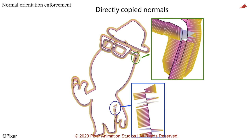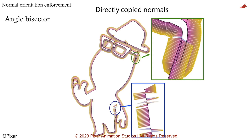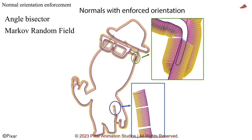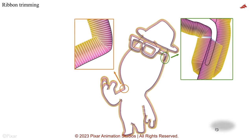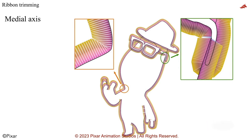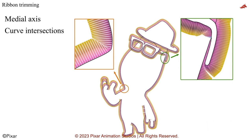To fix the skewed normals, we replace them with their angle bisector. To fix the alignment, we use a Markov random field to spatially align the normals along the curves in the first frame, and then temporally track the alignment to fix subsequent frames. From the adjusted curve normals, we create and trim a ribbon. To remove overlaps along the curves, we trim to a medial axis approximation from the points Voronoi diagram. Additionally, we trim to intersections with the original curves.